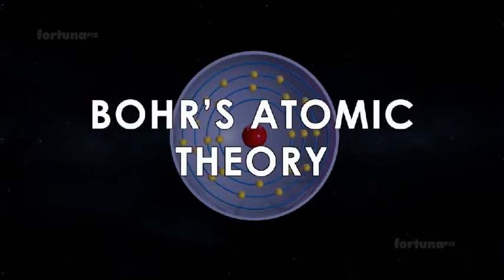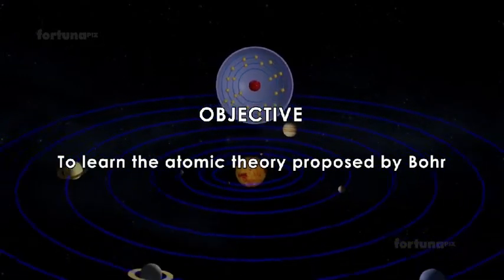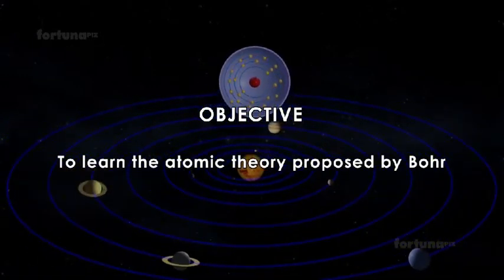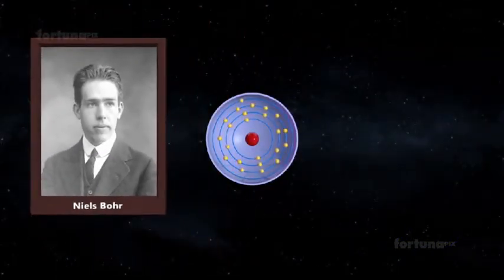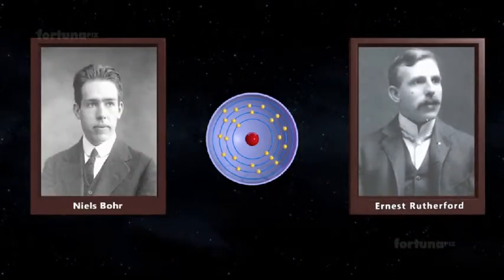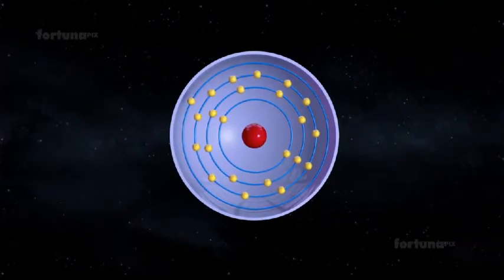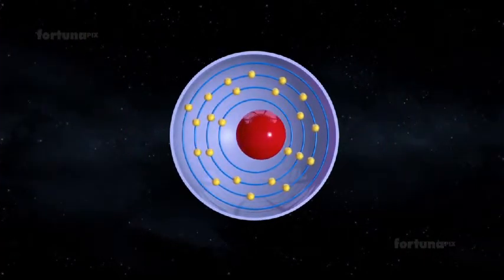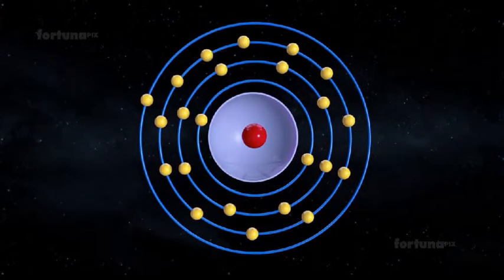Bohr's Atomic Theory. Objective: To learn the atomic theory proposed by Bohr. In 1913, Niels Bohr, a Danish scientist, proposed a model of the atom which was based on Rutherford theory. Rutherford's theory had shown the atom consisted of a positively charged nucleus with negatively charged electrons orbiting it.